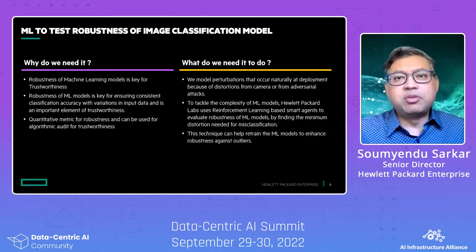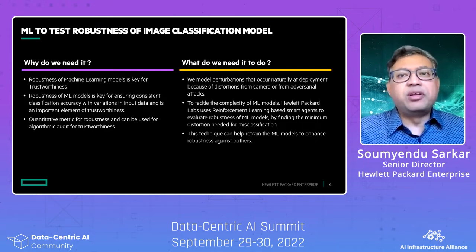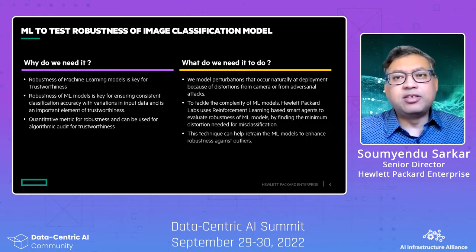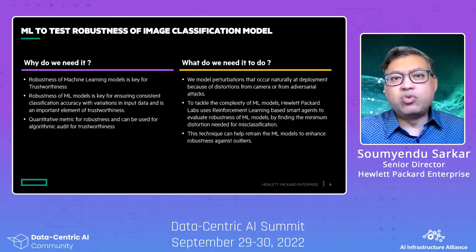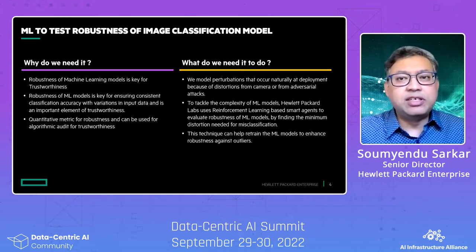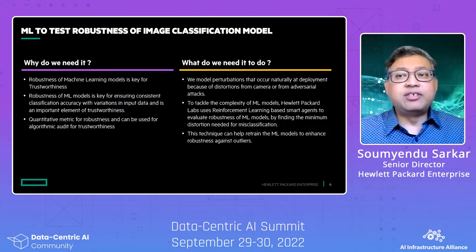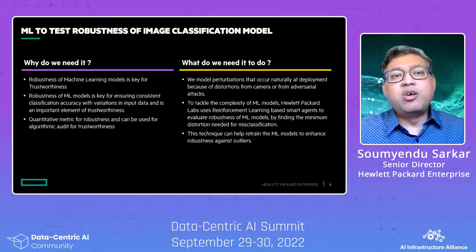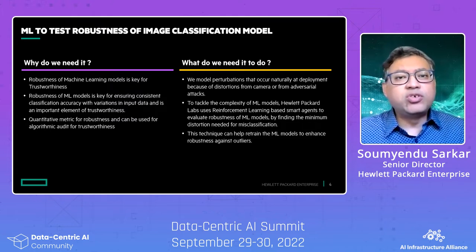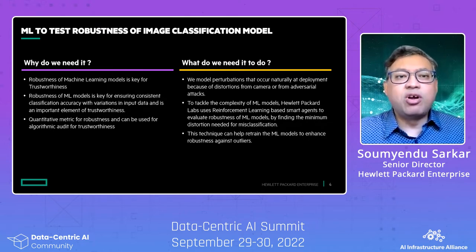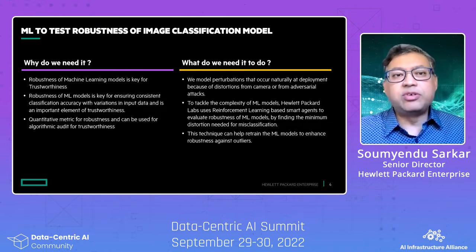To tackle the complexity of the machine learning models, we used smart machine learning technology called reinforcement learning to evaluate robustness and to find out the minimum distortion needed for misclassification. Unlike many other adversarial attack techniques of today, we keep these distortions limited to Gaussian noise to keep it close to the naturally occurring distortions that we see today.